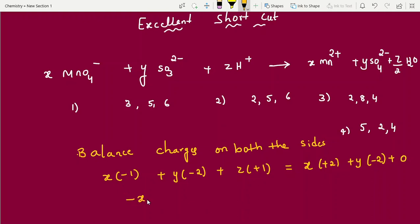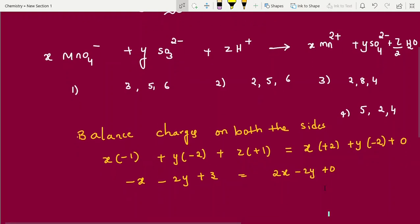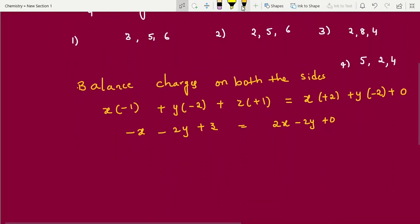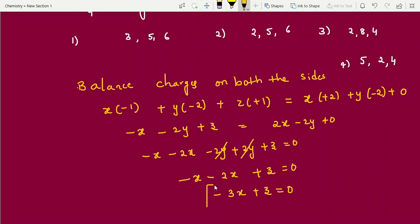Then it is minus X, minus 2Y, plus Z equal to 2X minus 2Y plus 0. Now can you solve this question, students? Minus X. If you bring 2X this side, minus 2X minus 2Y. If you bring 2Y this side, plus 2Y plus Z equal to 0. Cancellation terms, you can cancel. Finally, minus 3X plus Z equal to 0. This is your equation.